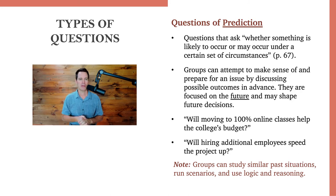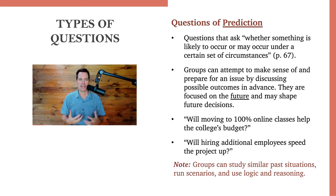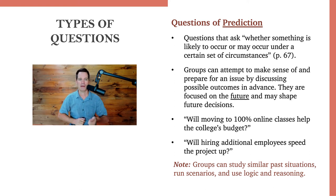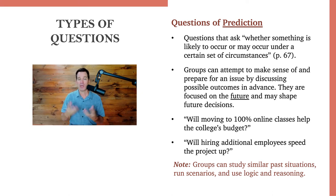Next, we have questions of prediction. These are questions that ask whether something is likely to occur or may occur under a certain set of circumstances. This is very important for groups and teams to get a handle on. Groups can attempt to make sense of and prepare for an issue by discussing possible outcomes in advance. They are focused on the future and those discussions may shape future decisions. For example, will moving to 100% online classes help colleges budget? Or in your own team, will hiring additional employees speed the project up? These are prediction questions, because answering them helps you decide and move forward.